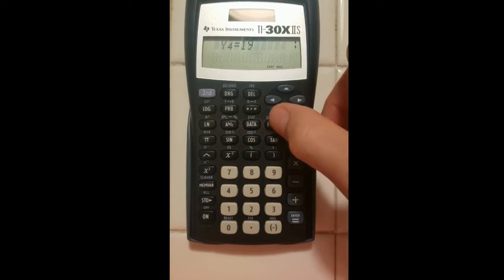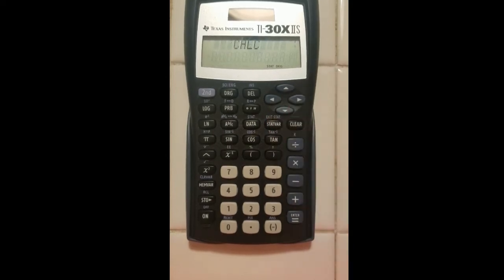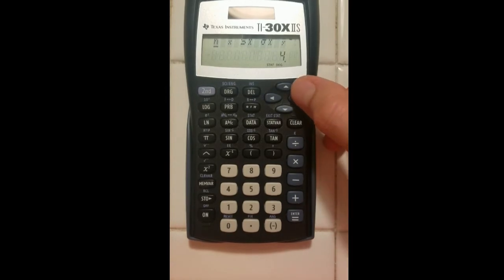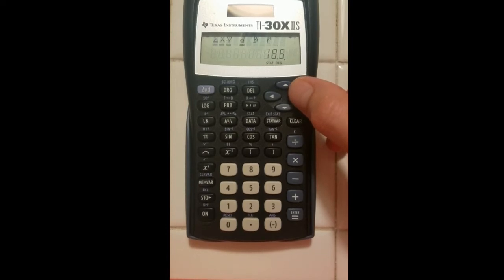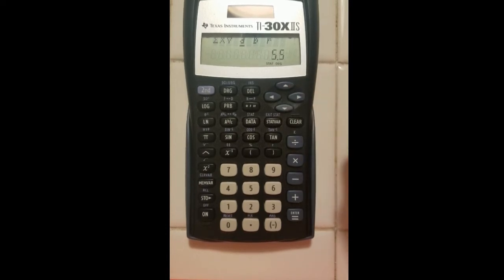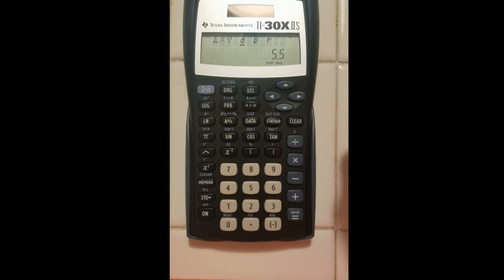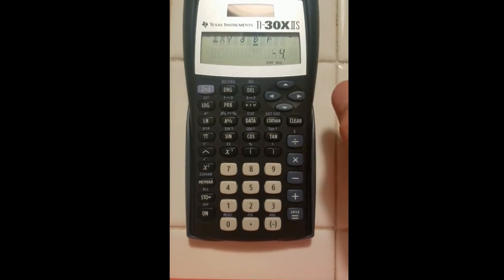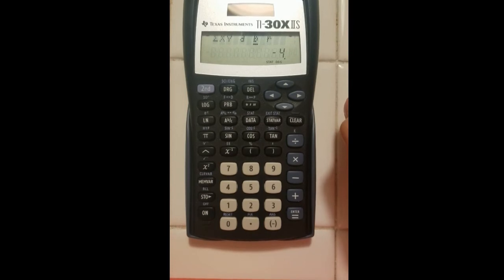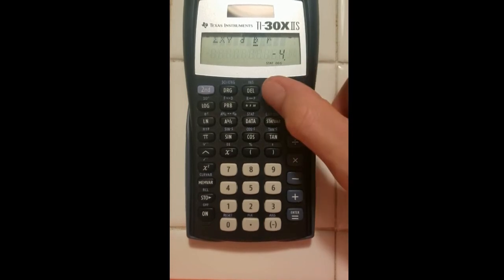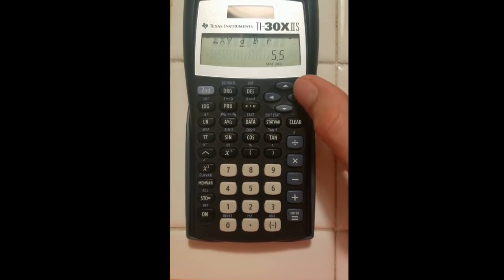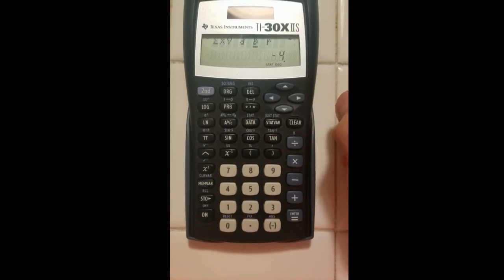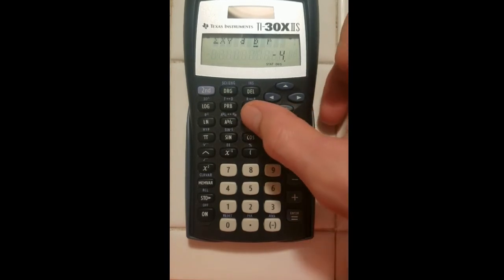I'm going to press stat var and it's going to calculate everything for me. Now here's some statistics that we'll deal with later, but I'm going to just press right until I get all the way over to the value a. A is my slope, so I have a slope of 5.5. B is my y-intercept. I have a y-intercept of negative 4, so my equation would be y equals 5.5x minus 4.